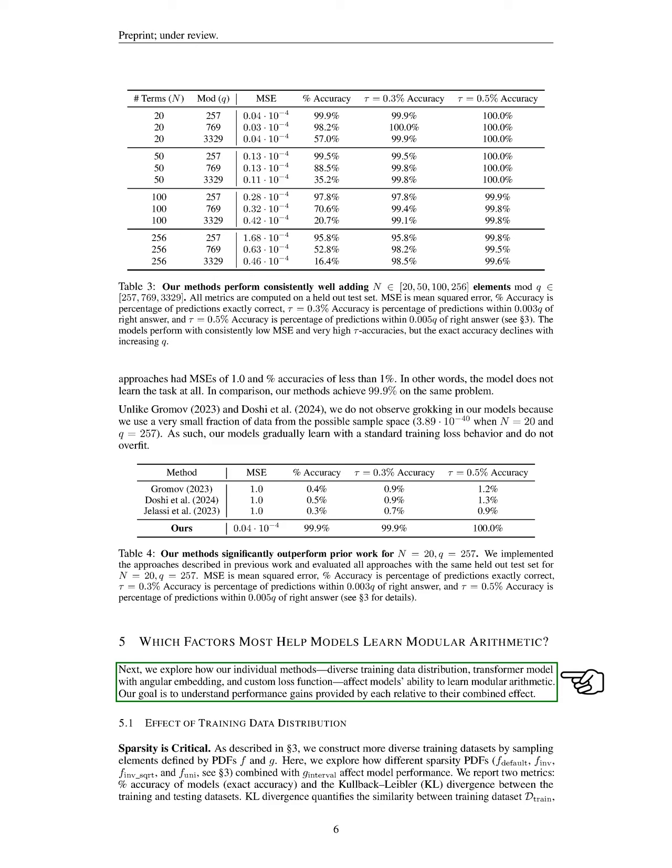First, we examine the effect of training data distribution. We find that sparsity is crucial. We create diverse training datasets by sampling elements defined by specific probability distributions. We analyze how different sparse distributions, combined with a certain interval distribution, influence model performance.